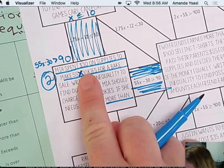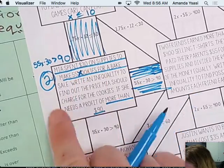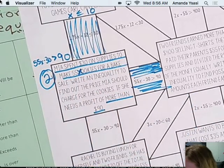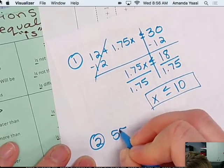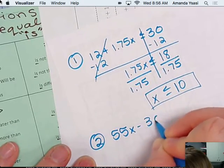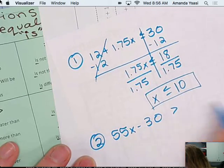So 55X is 55 times X. X is the number, I mean the charge for the cookies. So number two, 55X minus 30 is greater than $90.